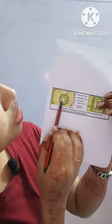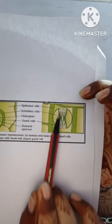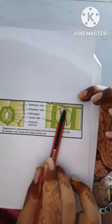In case of dicot, they consist of two bean-shaped cells which are called the guard cells. Whereas in monocot or in grasses, they are the dumbbell cells.